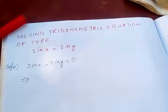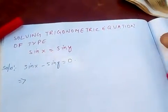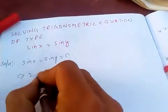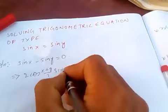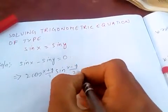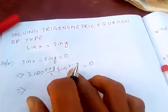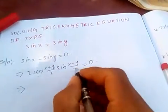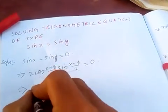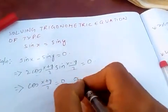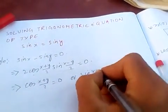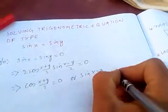Applying the sine difference formula, we get 2 cos((x+y)/2) times sin((x-y)/2) equals 0. This implies that each factor must equal 0 separately, so cos((x+y)/2) equals 0, or sin((x-y)/2) equals 0.